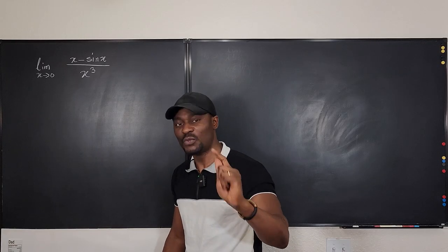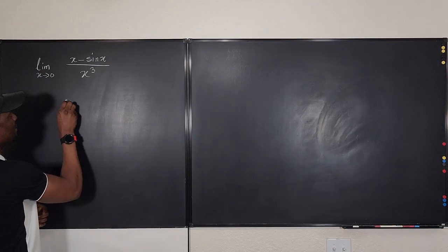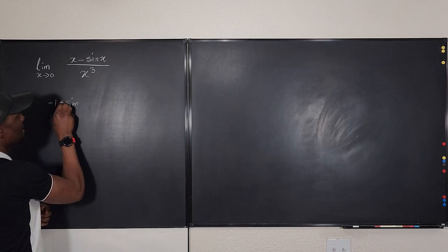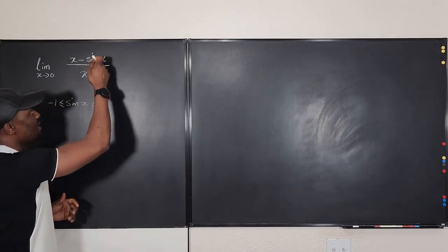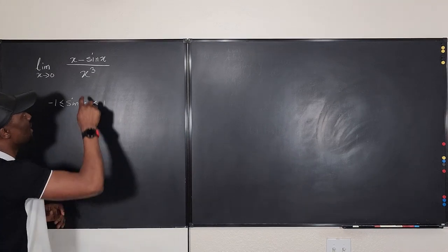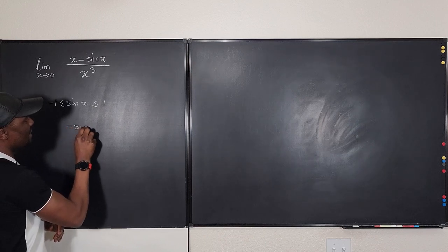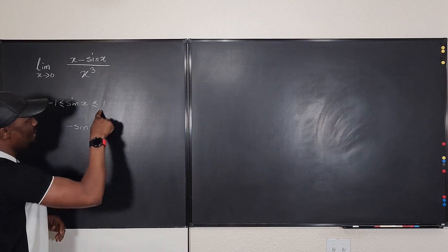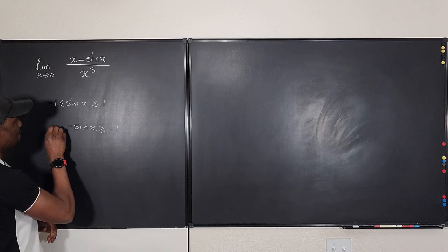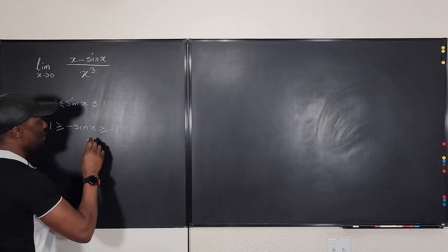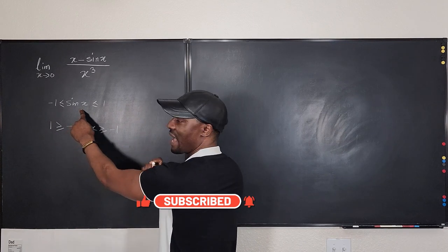Let me show you what squeeze theorem is going to do to you if you try to use it. So we have negative 1 is less than or equal to sine x, which is less than or equal to 1. That's how you start your squeeze theorem. Then I'm going to multiply this by negative 1 so that I have negative sine x. I'm building gradually from here. I'm going to multiply this by negative 1, multiply this by negative 1. So what we have now is 1 is greater than or equal to negative sine x, which is greater than or equal to negative 1. But I can reverse it this way, and it takes me back to the original.